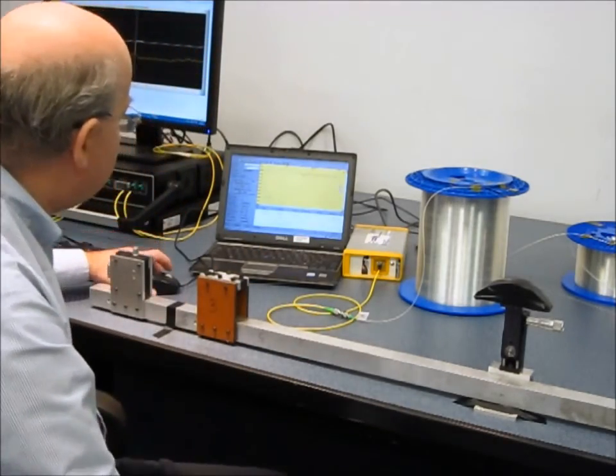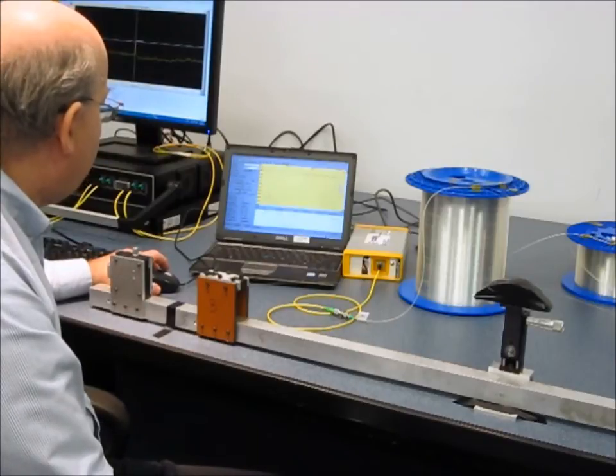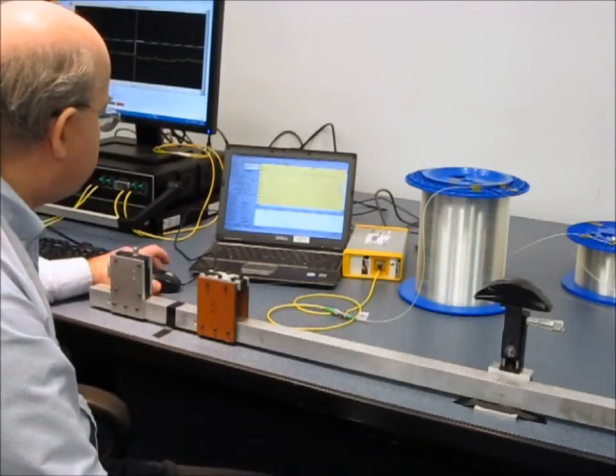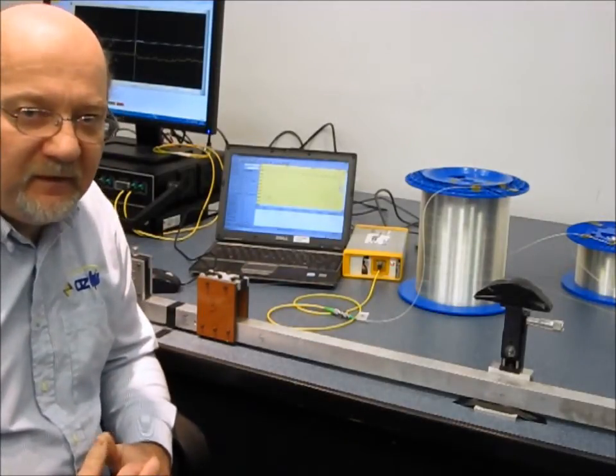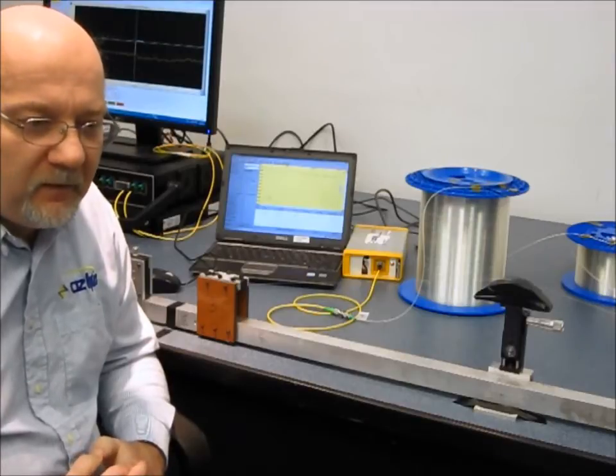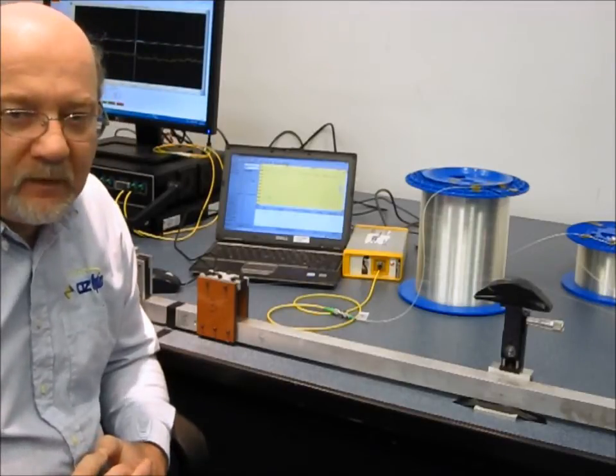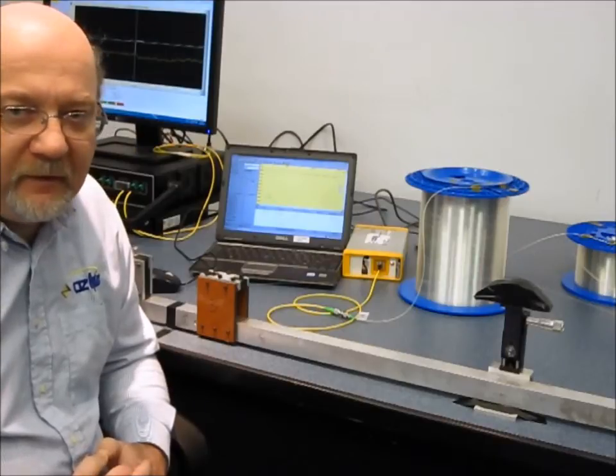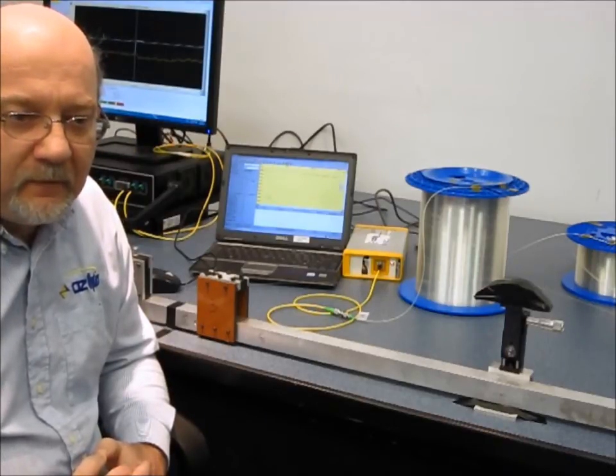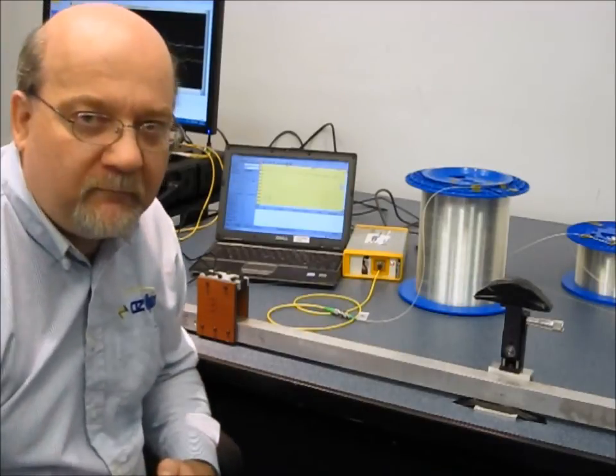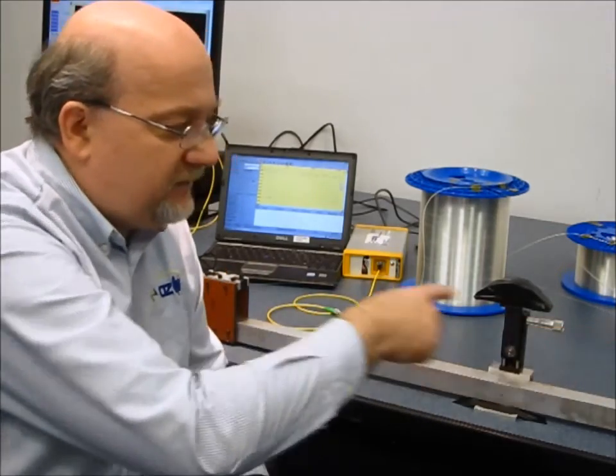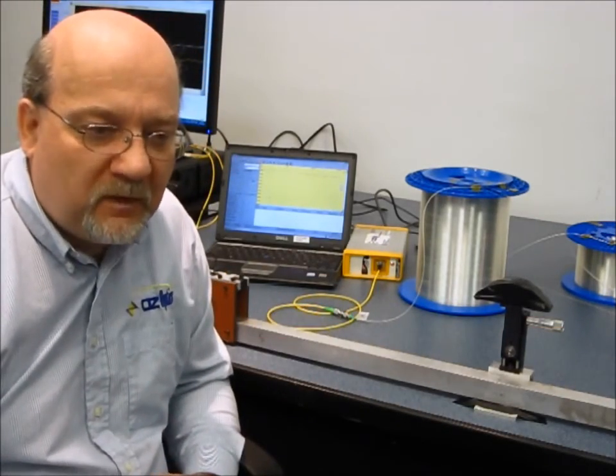So we're going to start a scan and see what we get. While it's scanning, let me tell you a few details about the settings we have used. We've set the OTDR to send out pulses that are 10 nanoseconds in duration. At this setting, it supposedly has a resolution of about 1 meter, corresponding roughly to the section over which we are stretching the fiber.